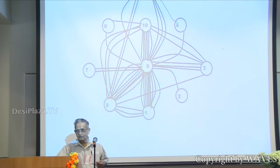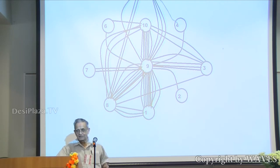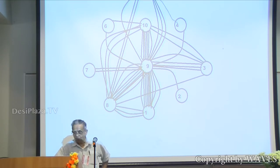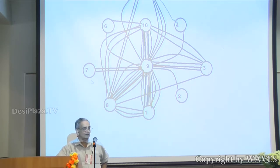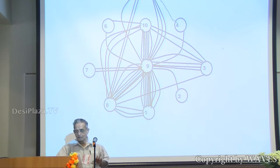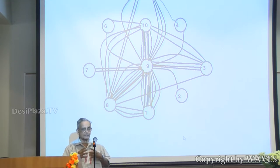If there is one rishi connecting to mandala 5, and the same or another rishi has contributed to mandala 5 and mandala 4, you see that mandalas 2, 3, 4, 5, 6, 7 all have fewer connections — sparse connections. But mandalas 9, 10, 8, and 1 are densely connected.